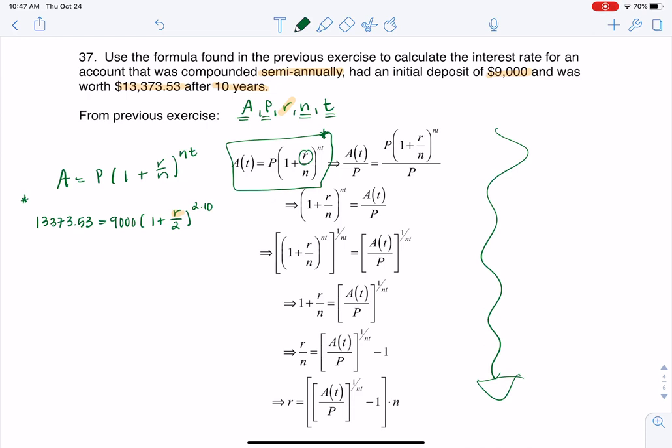So if you see here, the first thing I did was I divided both sides by the principal. Well, I'm going to do that here. I'm going to divide both sides by 9,000.